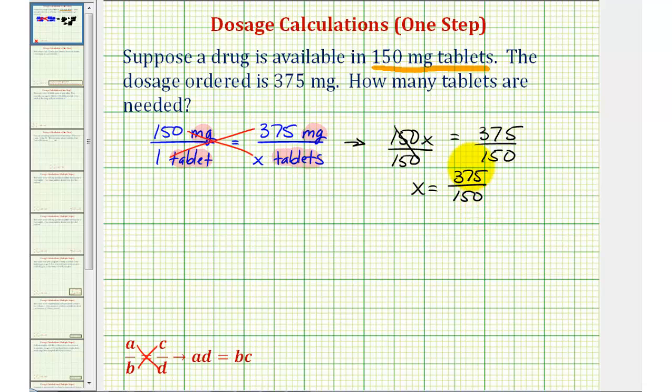We do want to simplify this, though. These two do share a common factor of 75. There are five 75's in 375, and there are two 75's in 150.